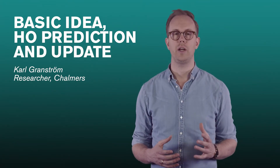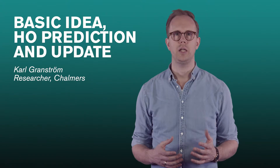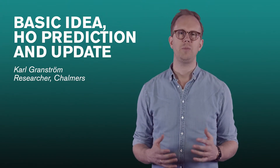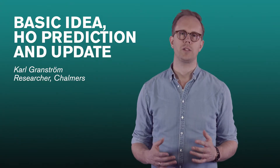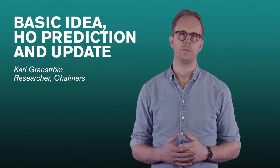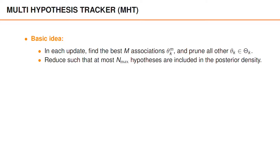Now, the first variant of MHT that was published included inference on the number of objects. But to keep things simple, in this course, we're going to limit ourselves to a known number of objects. The basic idea in MHT is that we, in the update, find the best M associations and prune all other associations. After the update with multiple associations, we use what is called reduction methods to make sure that the posterior density has at most N-max hypotheses. Specifically, we use pruning and capping.